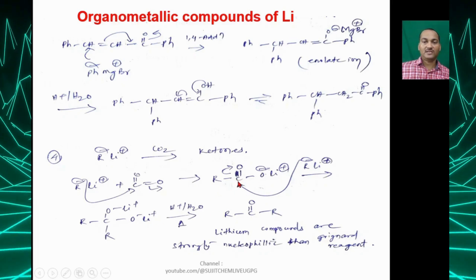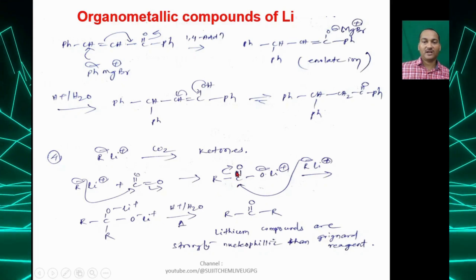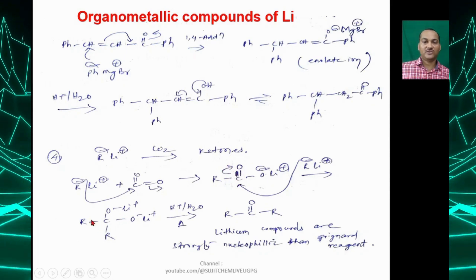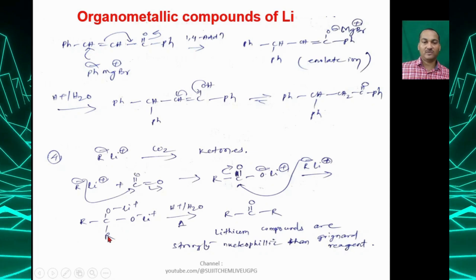The second equivalent attacks the carbonyl carbon and the double bond breaks on oxygen, forming a dilithiated compound.